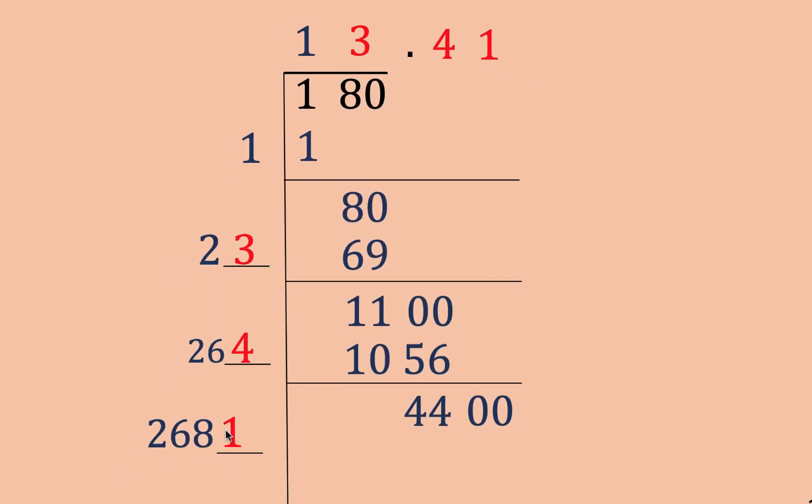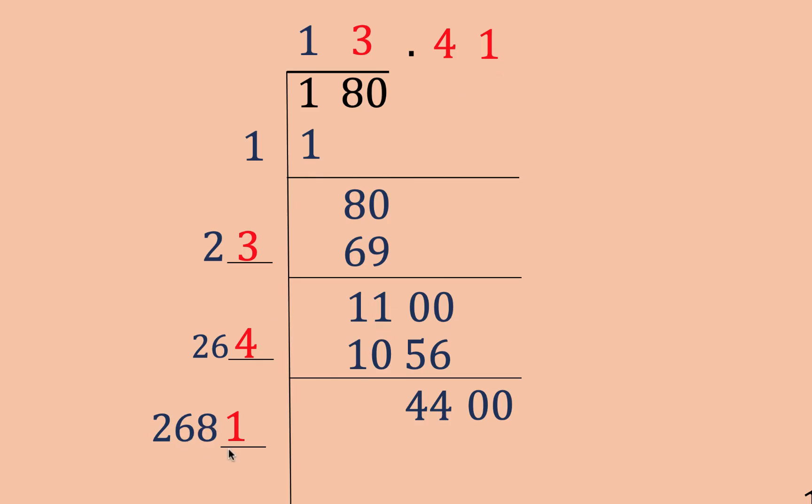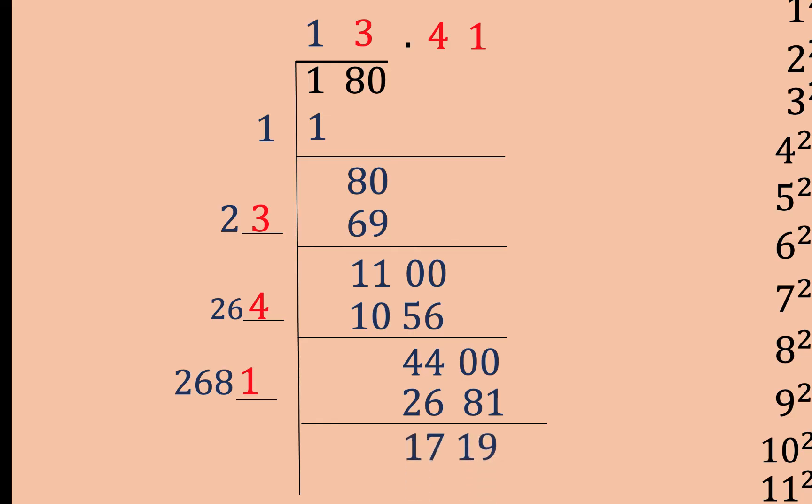And then we double 134 to get 268. And put a blank here for the next digit. And that number must be 1 because 1 times 2,681 is equal to 2,681. If we make this 2 and 2, that is already more than 4,400. And then we subtract and repeat the process. Now, this is bigger now.